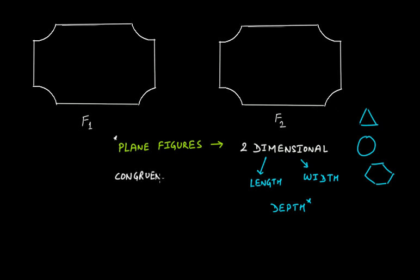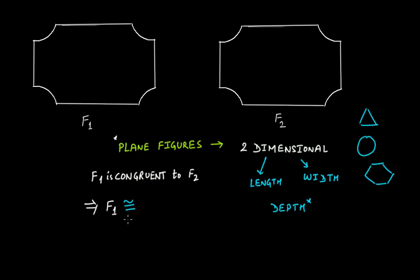You will say that F1 is congruent to F2. The way to represent it will be: F1 ≅ F2. This symbol for congruence is very important.